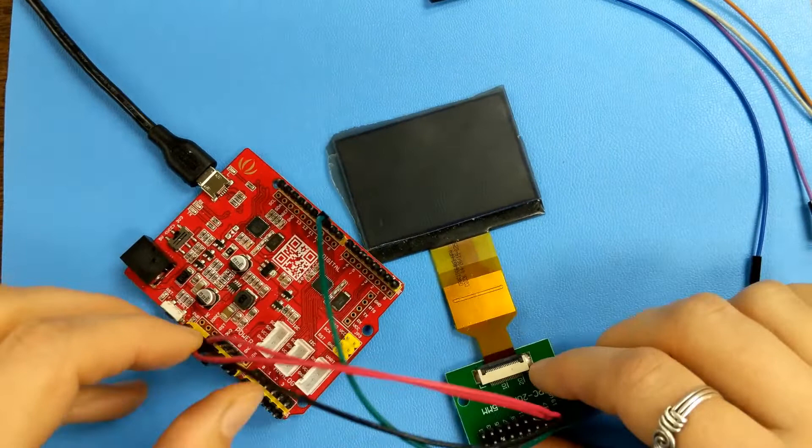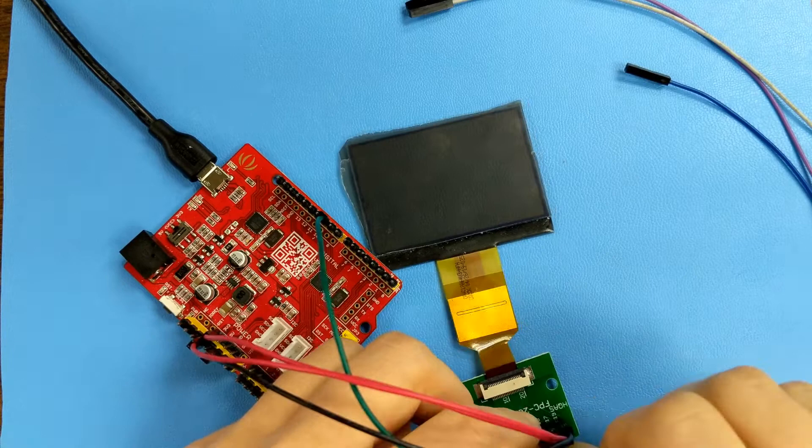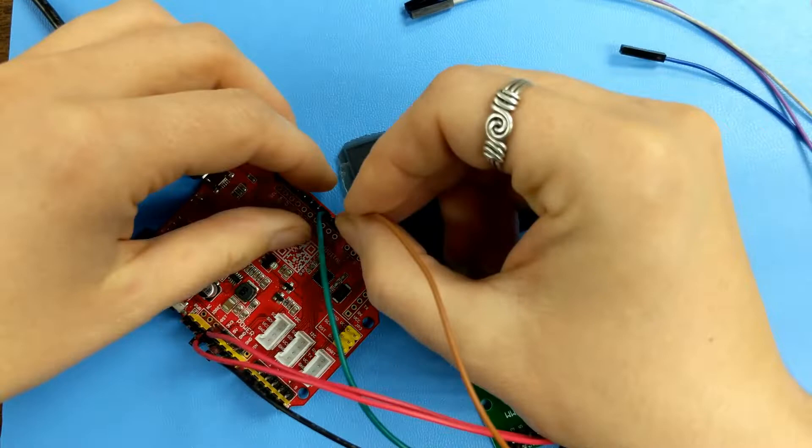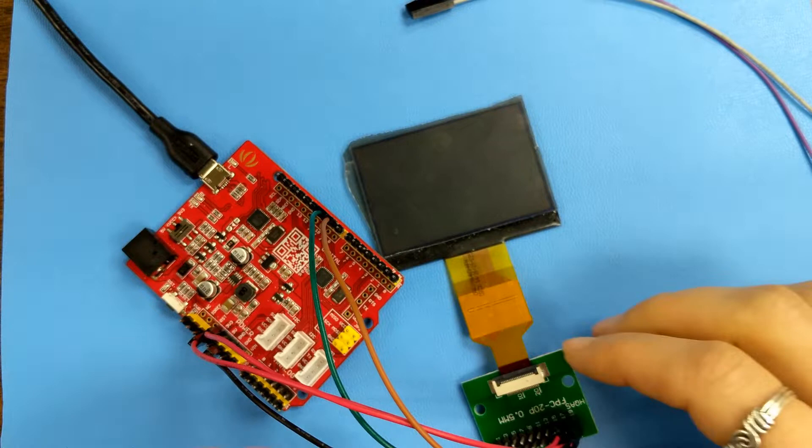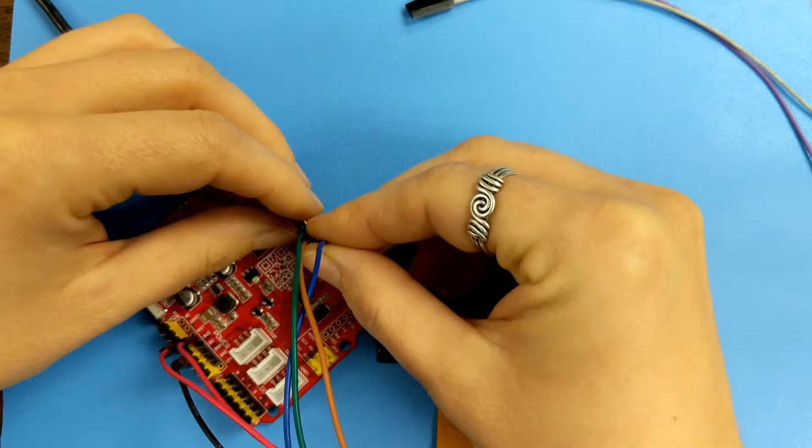And then pin 5 is our reset. We use the same wires. So, we go pin 5. And the reset is D9. And then we have our register select, which is called A0 in the datasheet. And we go from pin 6 to D8 on the Arduino.